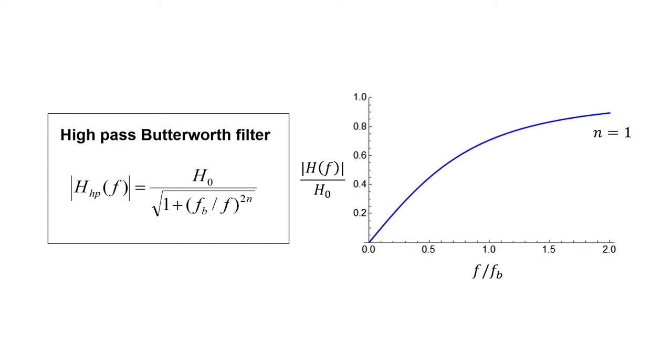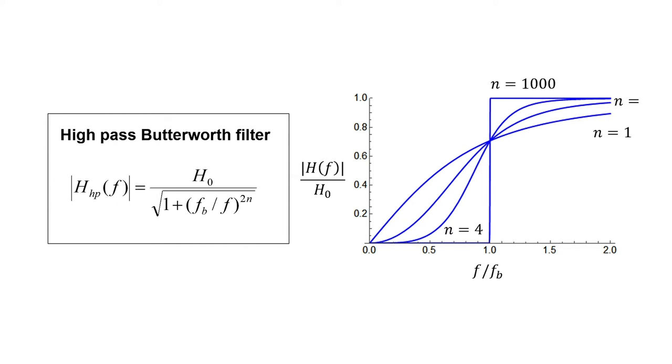Let's take a look at the transfer function for various filter orders. It's a lot like the low-pass filter. When we start to increase n, we see that the behavior of the high-pass filter starts to mirror the behavior of a perfect high-pass filter.